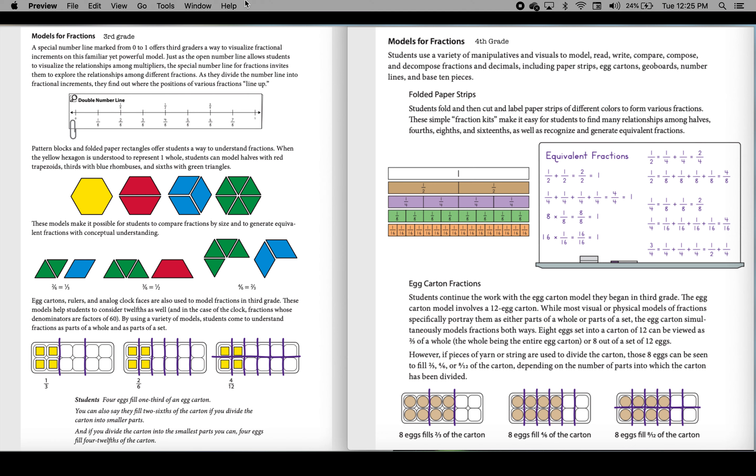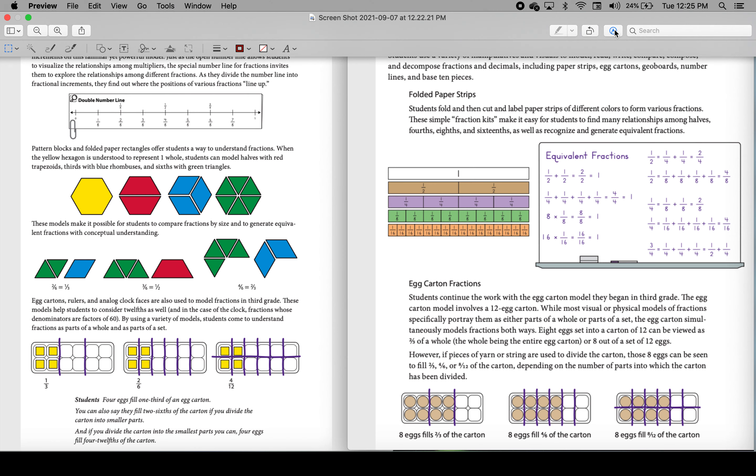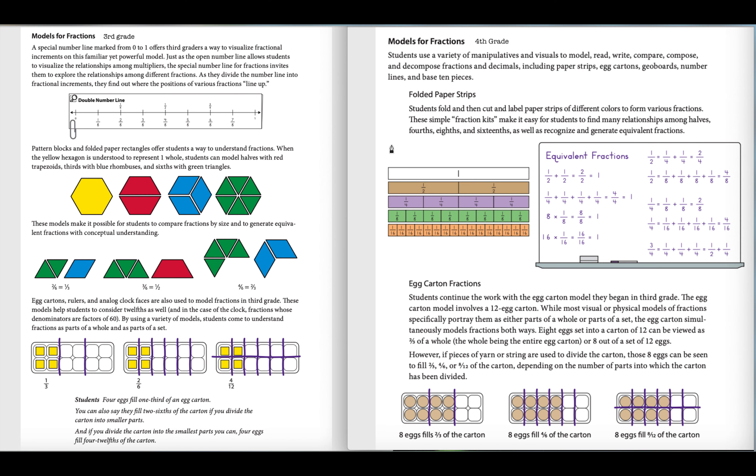If you notice, we are first looking at the third grade double number line. And here you can see that this is where we are starting to seed equivalent fractions without necessarily calling them equivalent fractions. So on a double number line we can see where the fractions line up.